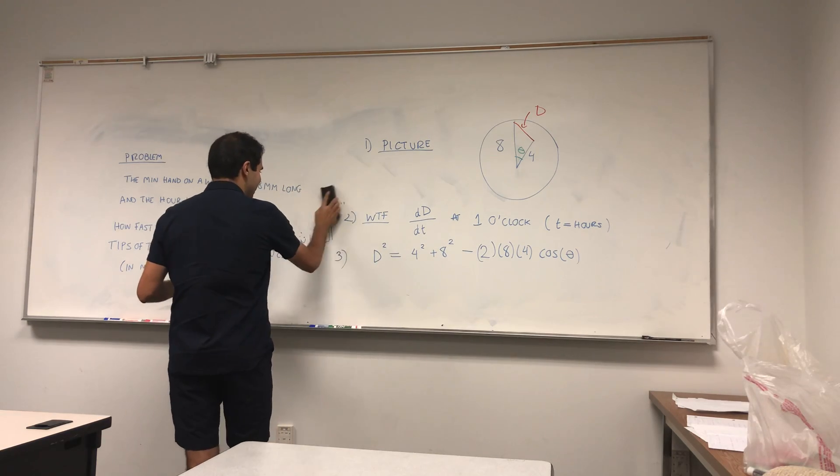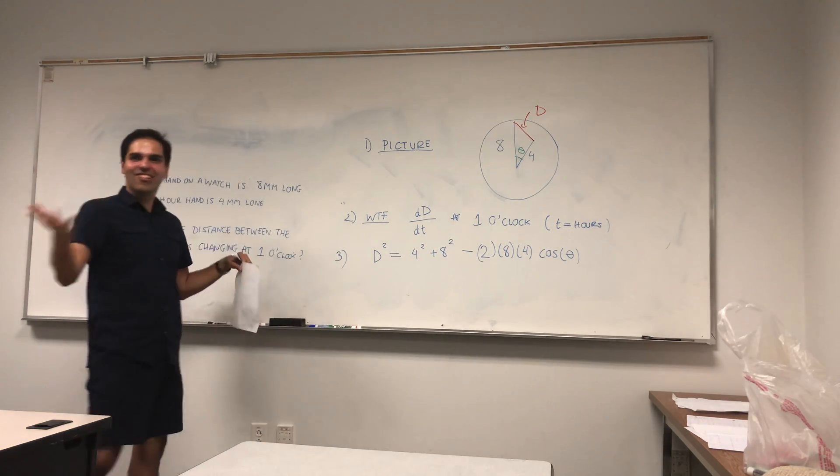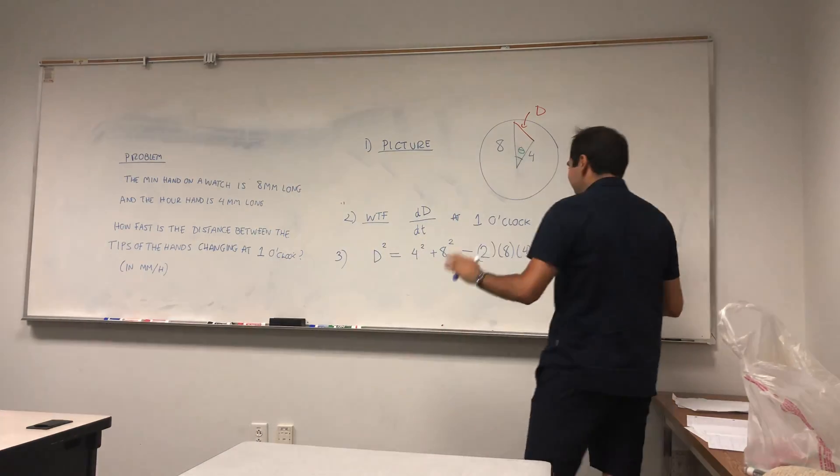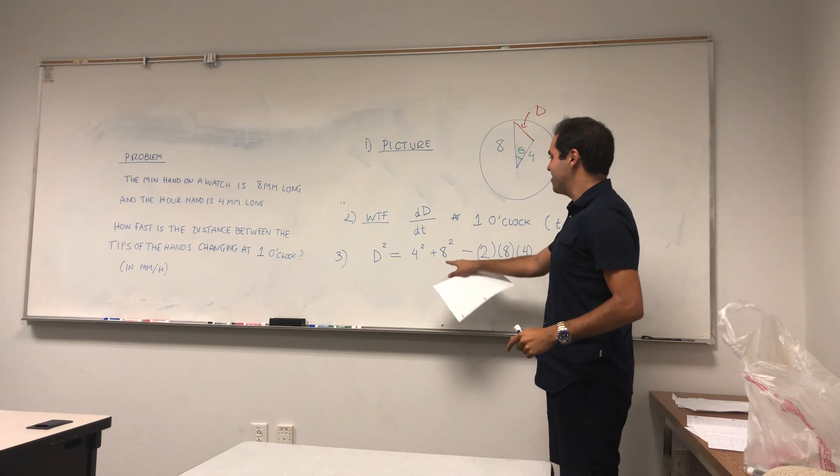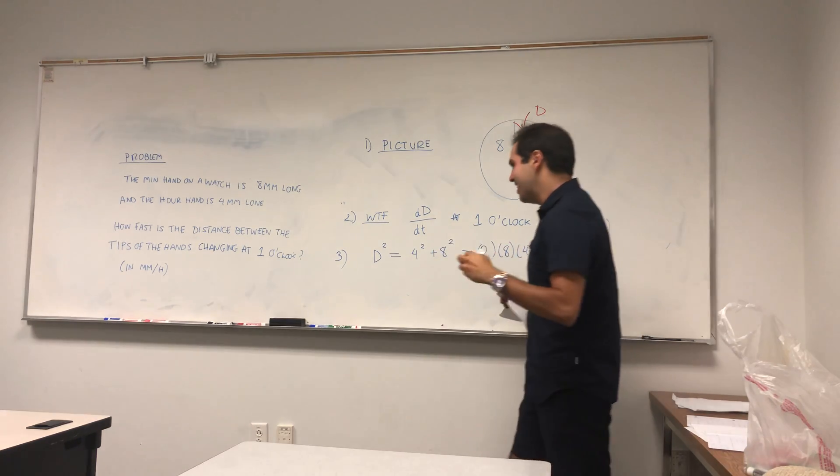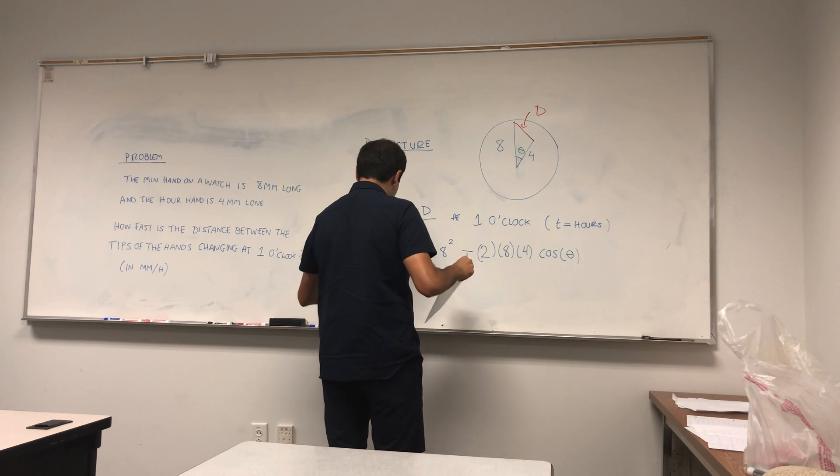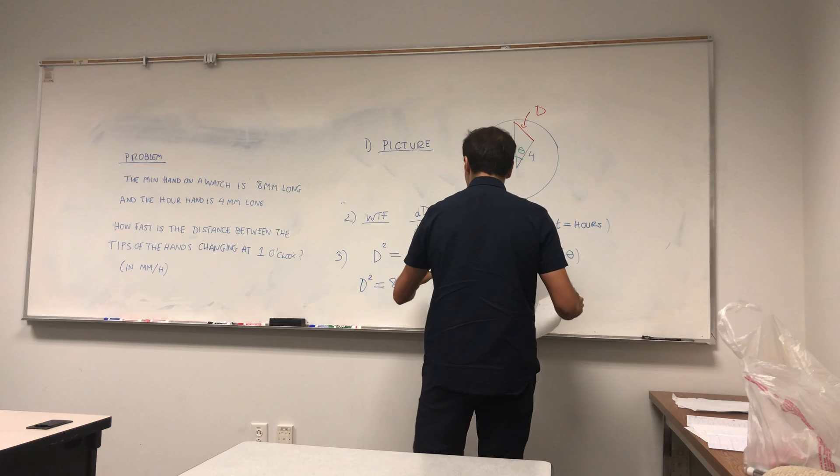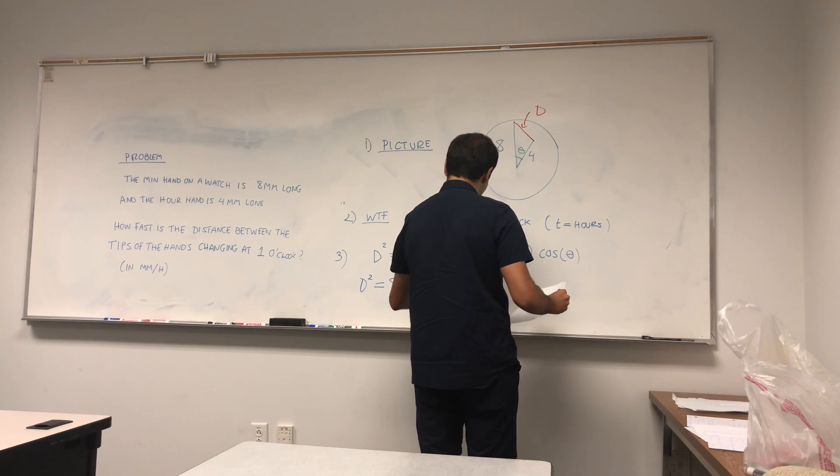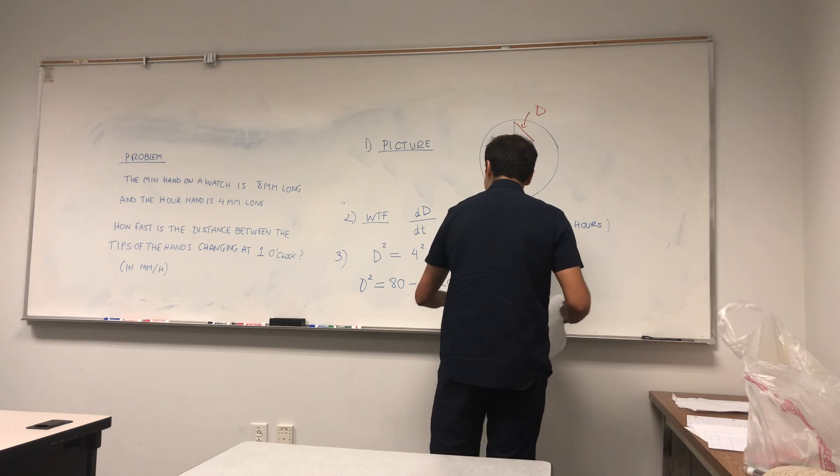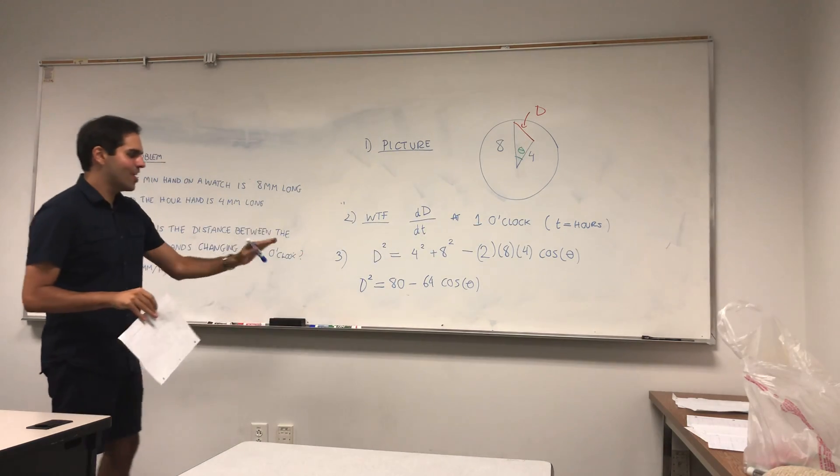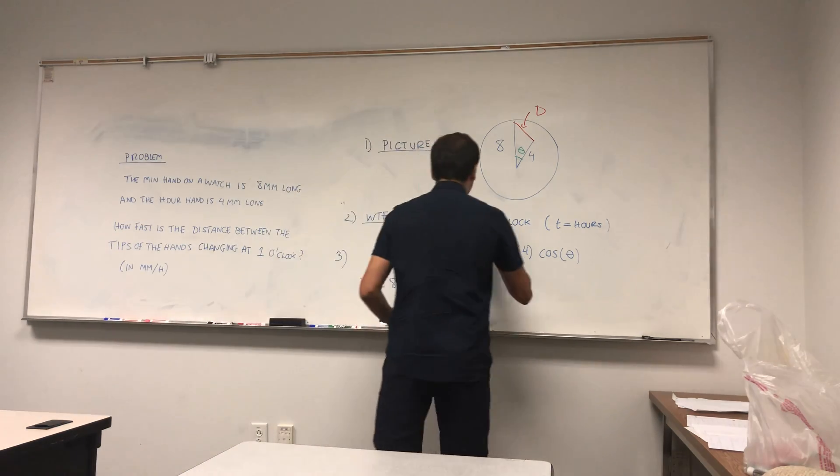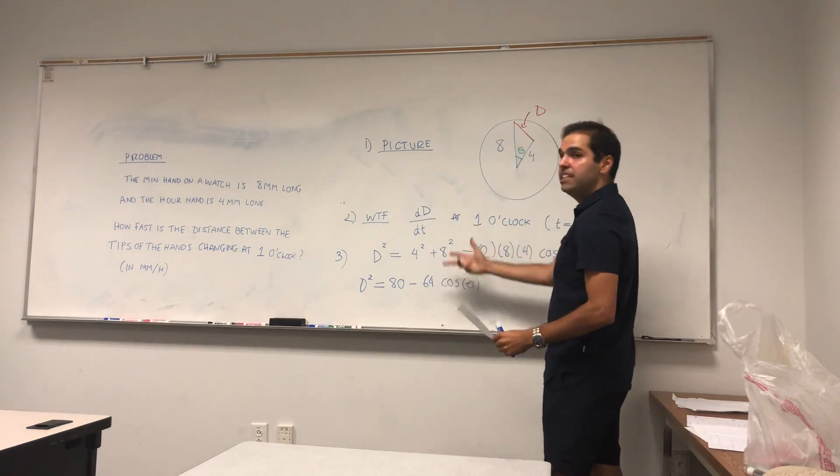So al-Kashi's formula, maybe it's related to Cauchy. Anyway, so what do we have? 4 squared plus 8 squared is 64 plus 16 which is 80. So D squared is 80 minus, 8 times 4 is 32 times 2 is 64. So Nintendo 64 here. So we have D squared equals 80 minus 64 cosine of theta.